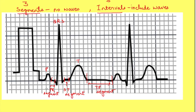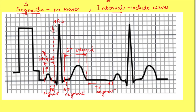Now let us see the intervals. PR interval is from the beginning of P wave to the beginning of QRS complex — it includes the P wave. ST interval is from the end of QRS complex to the end of T wave, so it includes the T wave. QT interval is from the beginning of QRS complex to the end of T wave, so it includes both the QRS complex and T wave. Now sometimes it becomes very confusing to remember where these intervals begin and end.